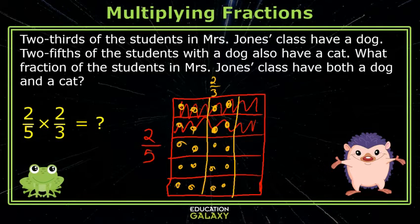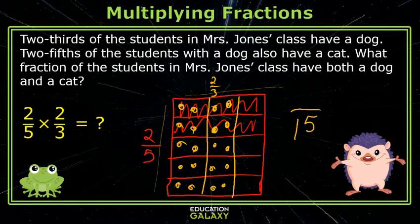Here's my model. Two out of five parts are shaded red and two out of three parts have orange polka dots. I see that there are 15 total pieces and four of those have both marks. Four fifteenths. Good, Henrietta.